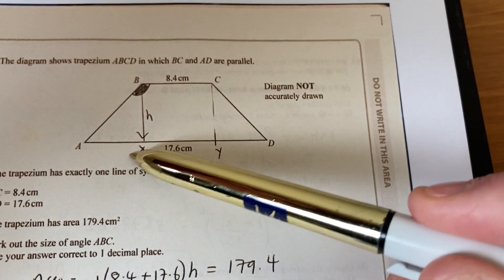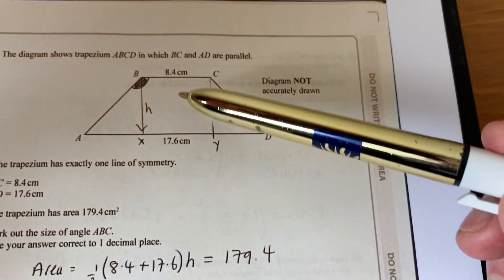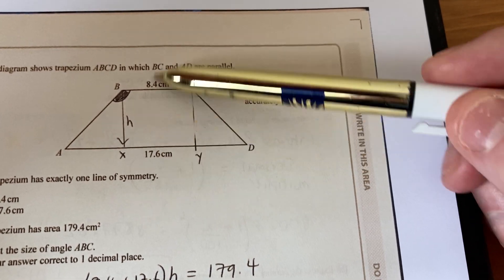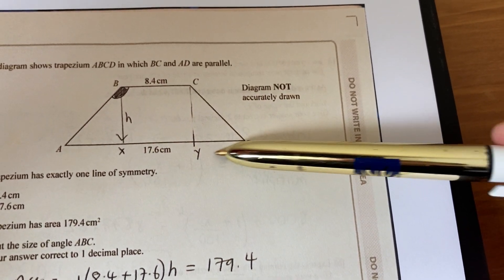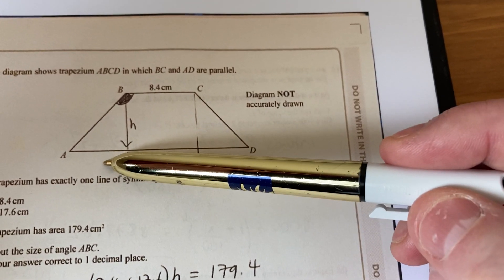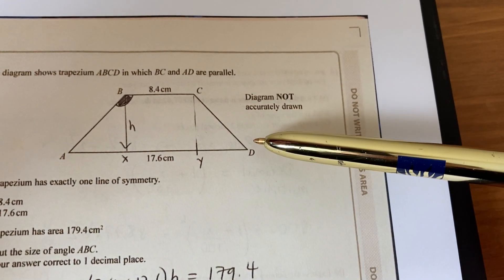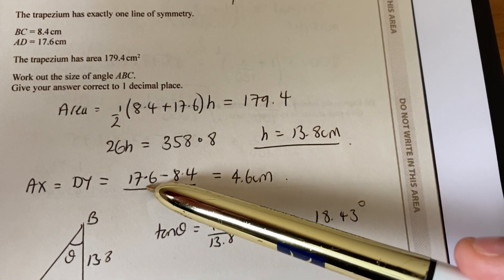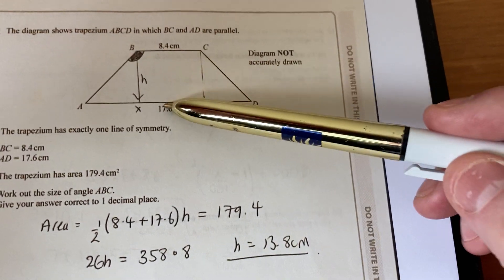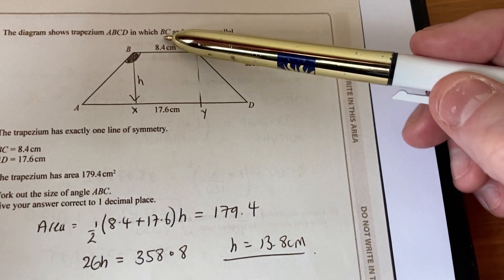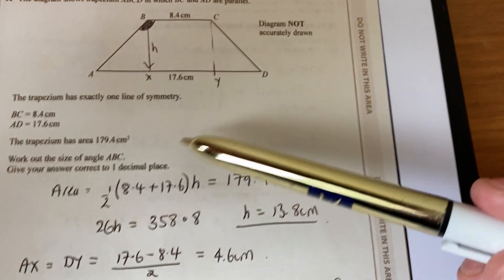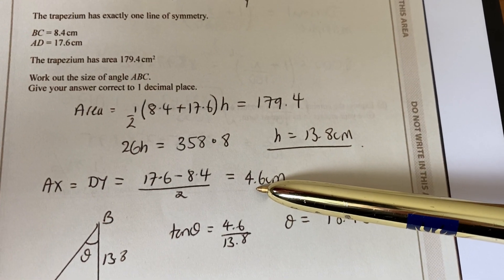Now the length Ax along here, because it says it's got one line of symmetry means you've got a line of symmetry down the middle means it's symmetrical. So the distance on the right-hand end here equals the distance on the left-hand end there and all together they make 17.6. So if you do 17.6 and take away the distance in the middle which is 8.4, same as the top, and then divide it by two because you've got some on the left-hand end and the right-hand end, then the distance is 4.6.